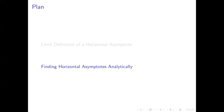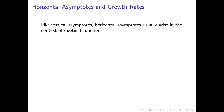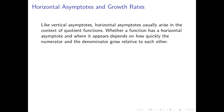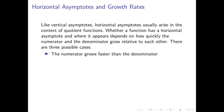Here we need to think about what we might call the growth rate of a function. Typically when we find a function that has a horizontal asymptote, it will be some kind of quotient function with a numerator and a denominator. What matters is how quickly the numerator and denominator grow relative to each other. One possibility is that the numerator grows faster than the denominator — in that case, the function will not have a horizontal asymptote.